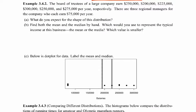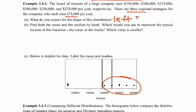Let's look at the next example. The board of trustees of a large company earned $250,000, $200,000, and so forth per year. There are three regional managers who each earn $75,000 per year. What is the shape of this distribution? With nine total data points, six of them earn above $200,000, meaning most data is clustered on the right side — making this a left-skewed distribution.